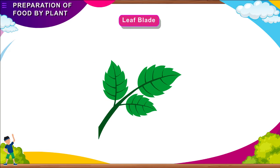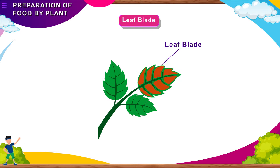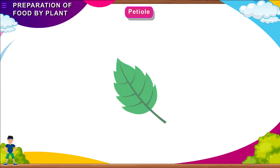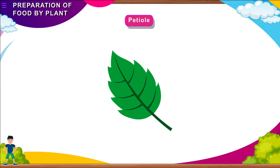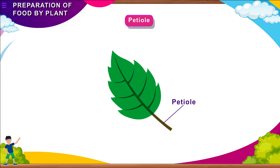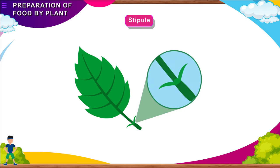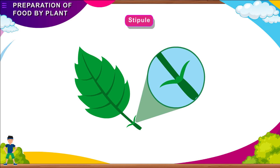Leaf Blade: The flat, broad surface of the leaf is called the LEAF BLADE. It helps to trap the maximum amount of sunlight. Petiole: The PETIOLE or the stalk of the leaf attaches the leaf blade to the stem. It helps in the supply of water and food, similar to the stem. Stipule: Stipules are small, leaf-like structures that are found at the base of the petiole of many flowering plants.